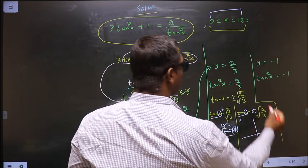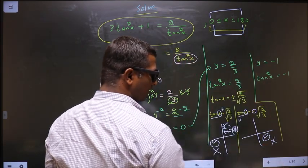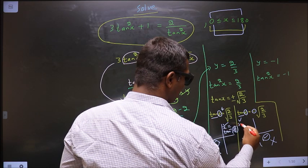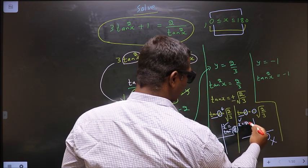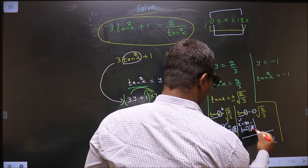The fourth quadrant does not lie in this interval. So we don't need to find this angle. To get an angle in the second, we should do 180 minus tan inverse square root 2 by 3.